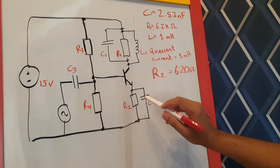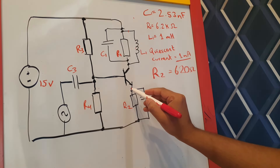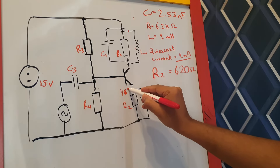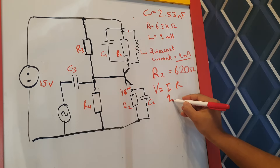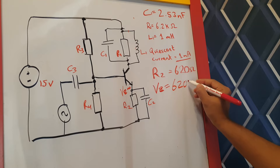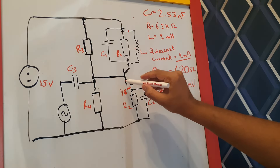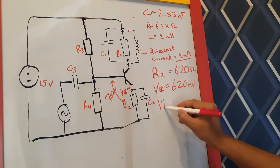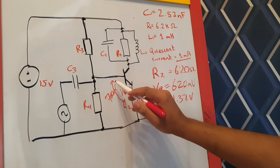Now that we know R2 = 620 ohms and the quiescent current is 1 milliamp, we can calculate the voltage at the VE junction using V = IR: 1 milliamp times 620 ohms gives VE = 620 millivolts. The base-emitter junction voltage is 700 millivolts, so VB = 620 + 700 = 1.32 volts on our base.